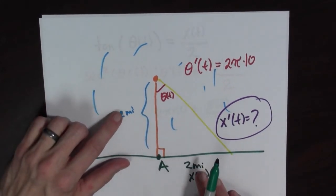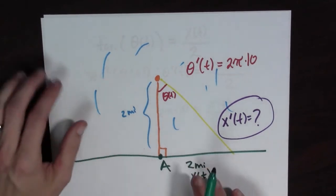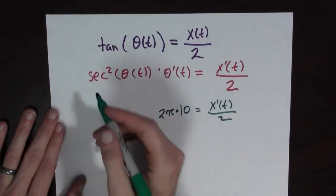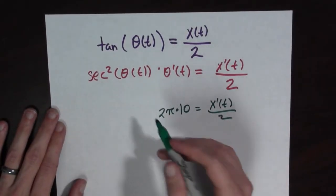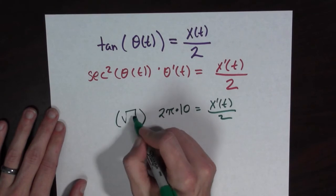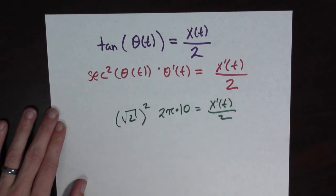Well this is a 45, 90, 45 right triangle. And so cosine of 45 degrees is 1 over the square root of 2. So since cosine is 1 over the square root of 2, secant is the square root of 2 over 1. And so secant squared is going to be the square root of 2 squared.